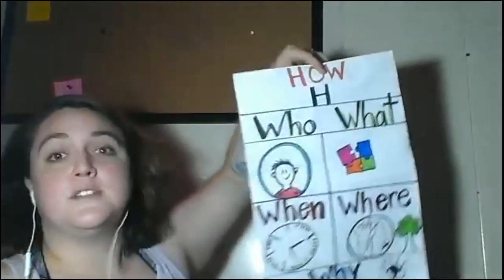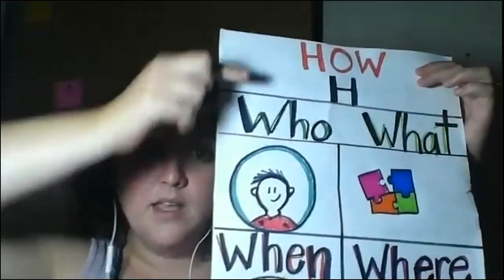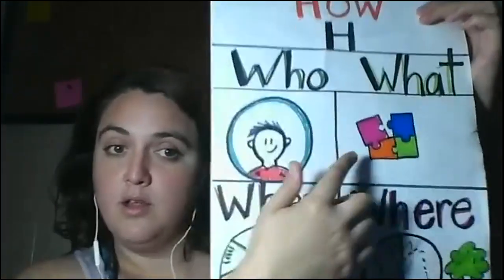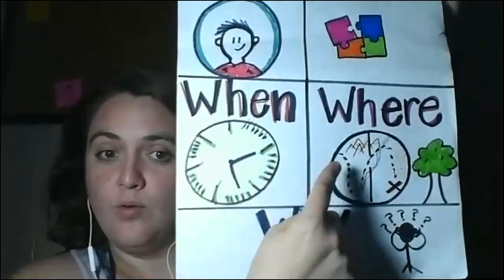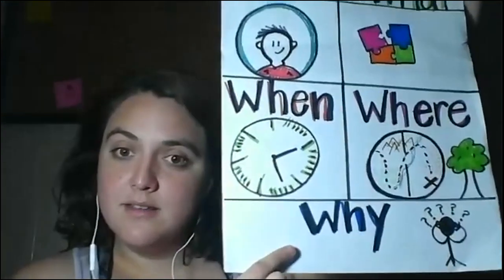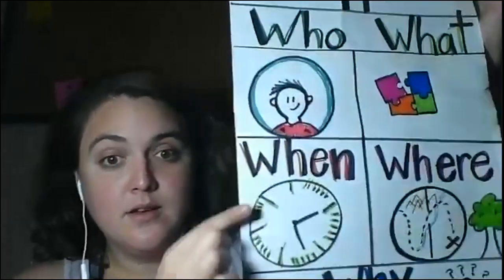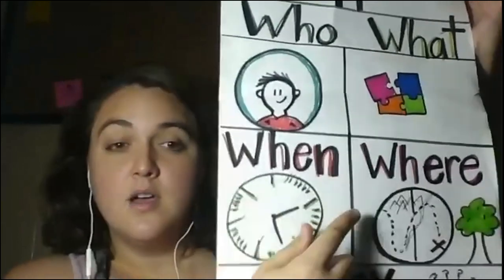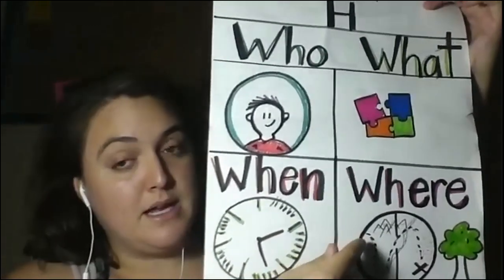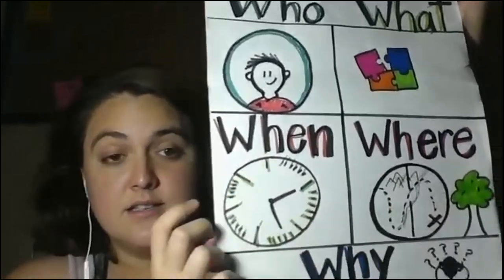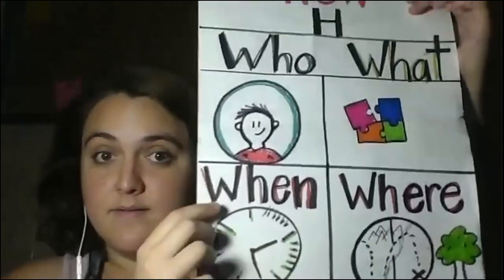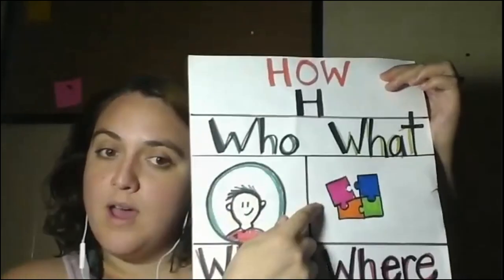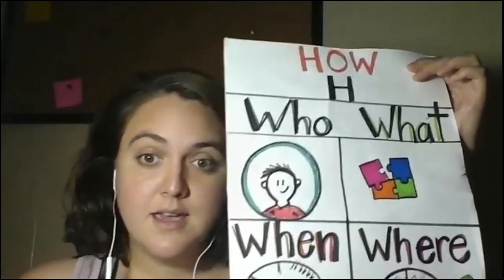Right now we're going to get our questions down. We're looking for questions that start with how, who, what, when, where, and why. These questions ask us why something happens, when it was — present or past — and where something happened.